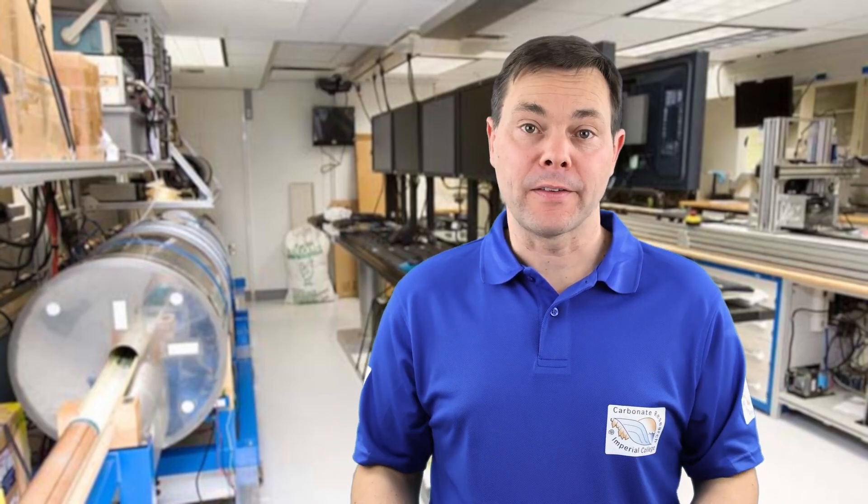Now, one thing I've not mentioned yet is the fact that if you look at base level rise and fall, this happens at different magnitudes and at different time scales. So on this plot, you can see we have time on the vertical axis and on the horizontal axis, we have distance. So that's the distance between the maximum transgression and the maximum regression.